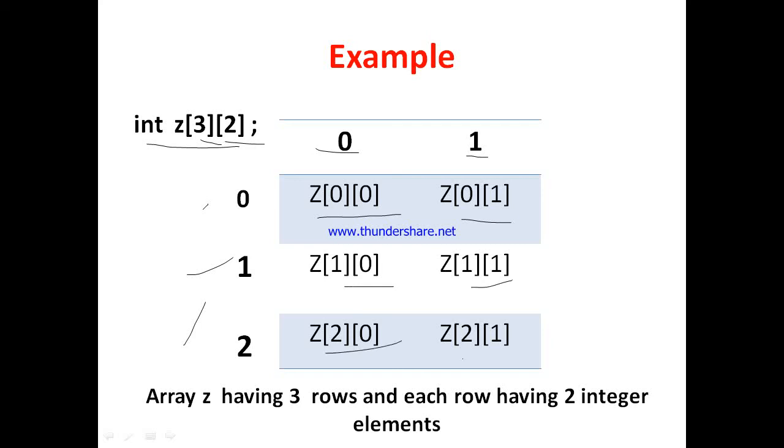In theory we can say that array z having 3 rows and each row having 2 integer elements. Why integer? Because here data type is int. So this is the part on declaration of array.